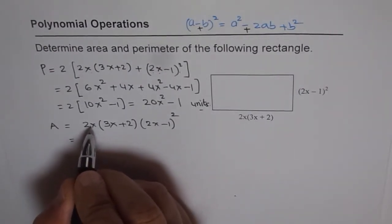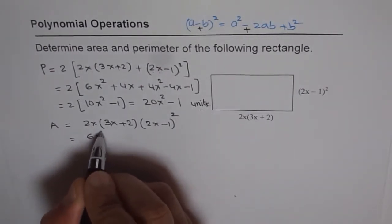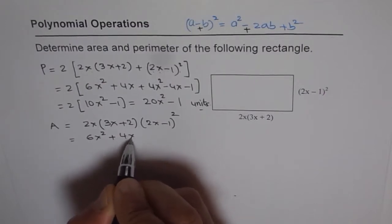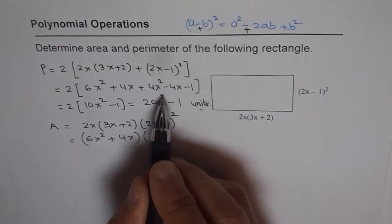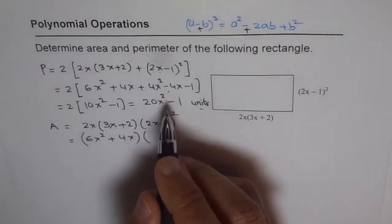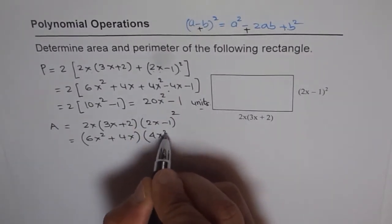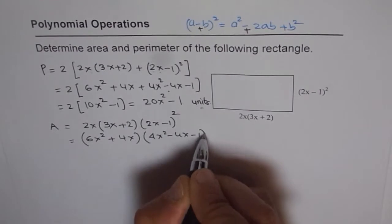let's multiply 2x with 3x plus 2, and also that separately. So we get here 2 times 3 is 6x squared plus 4x, and here we get, we'll expand it as we did here. So we can copy this which is 4x squared minus 4x minus 1.